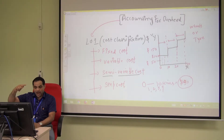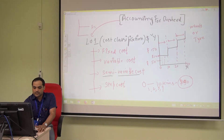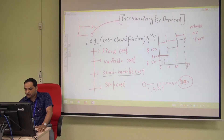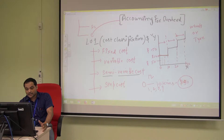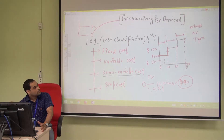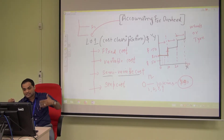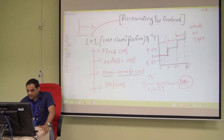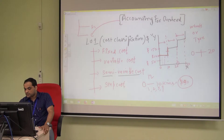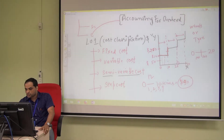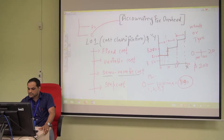That is the fixed cost portion, just like the flat fixed cost graph. But if you cross the limit — say your vehicle runs 12 kilometers — then from 10 to 20 kilometers your cost increases because you have to change the tire. That extra cost is another 50 dollars, so from 0 to 20 kilometers your total cost is 200 dollars.